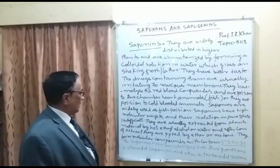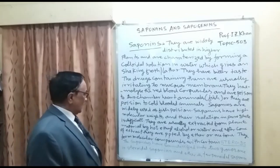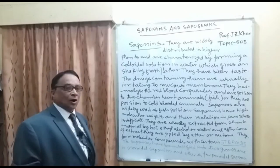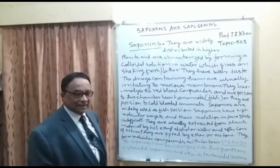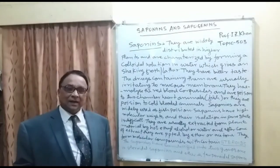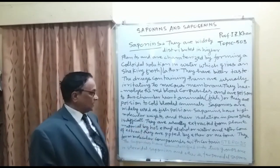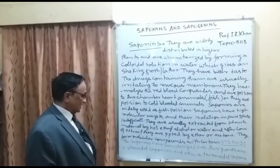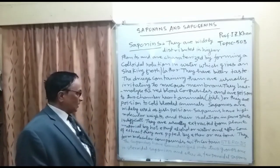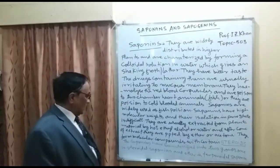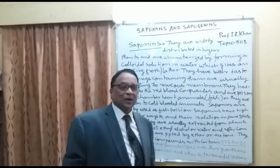Saponins are widely used as fish poison. They have high molecular weight and their isolation in pure state is difficult. They are usually extracted from plant material by hot ethyl alcohol or by water. After extraction, the solvent is evaporated to concentrate, and the concentrate is precipitated out by ether or acetone. The saponins have been classified into two groups: steroidal saponins and terpenoidal saponins.